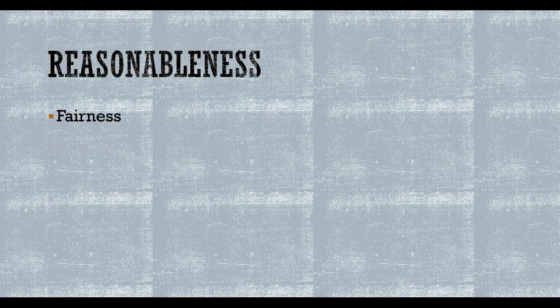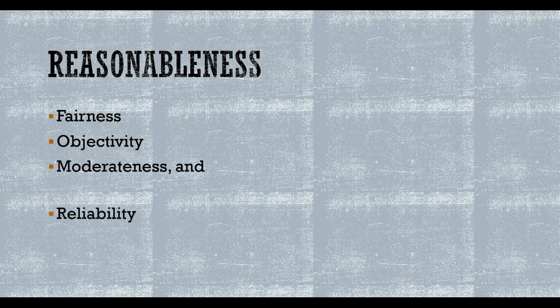The test of reasonableness involves examining the information for fairness, objectivity, moderateness, and reliability. Fairness includes offering a balanced, reasoned argument — not selected or slanted. Even ideas or claims made by the source's opponents should be presented accurately. Pay attention to tone and be cautious of highly emotional writing, as angry or hateful tones often lead to irrational and unfair attacks rather than reasoned arguments.